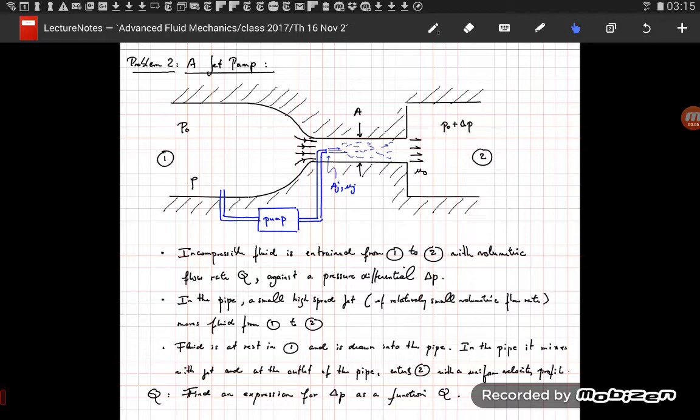OK, so here is our second problem. In this problem, we have two compartments, compartment 1 on the left-hand side and compartment 2 on the right-hand side, and they're connected through a short pipe here.